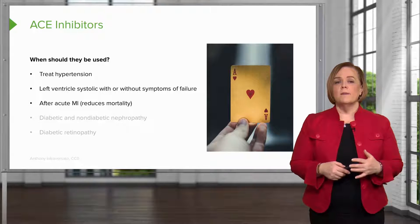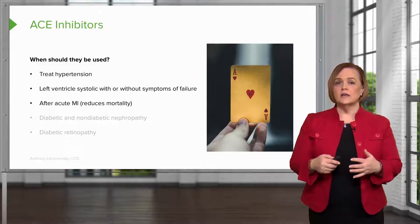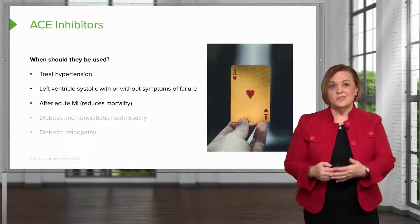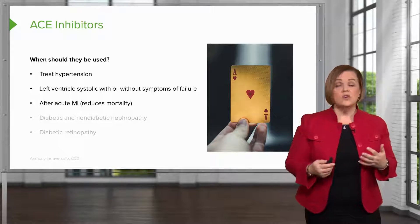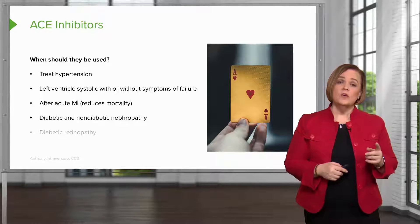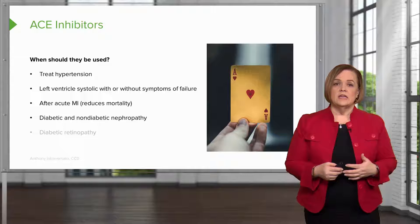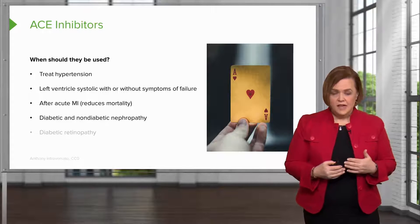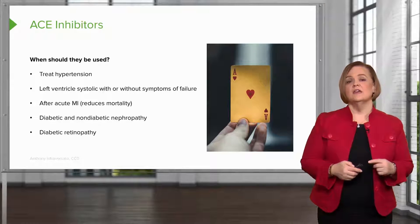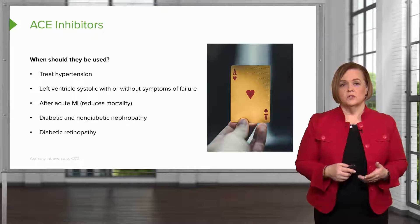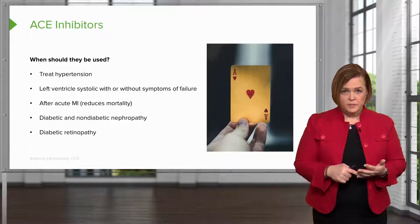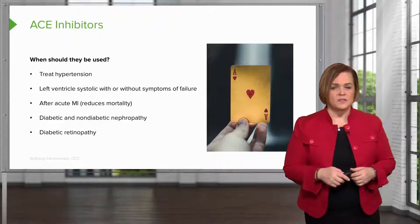After someone has an MI — a myocardial infarction, or heart attack — if we give them ACE inhibitors, many studies have shown that this reduces their chance of mortality, and that means death. That's a good thing — an overall healthcare goal that we help patients reduce their risk of mortality so they can live their best life. We also use ACE inhibitors with diabetic patients because they can help with diabetic and non-diabetic nephropathy, diabetic retinopathy, and high blood pressure. Research has supported ACE inhibitors for left ventricular problems, after a heart attack, nephropathy, and diabetic retinopathy — problems with your eyes.